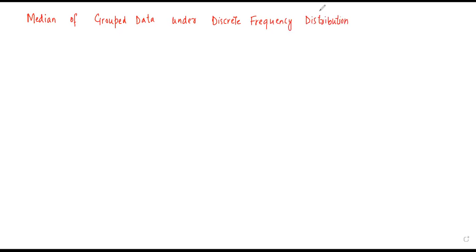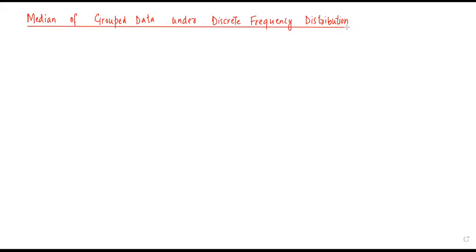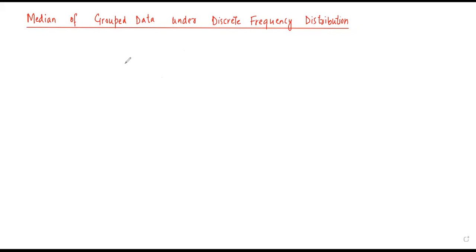Today we will see how the median of grouped data can be found when the frequency distribution is discrete — when there are no class intervals involved. It is very easy. Let's take an example and explain it.